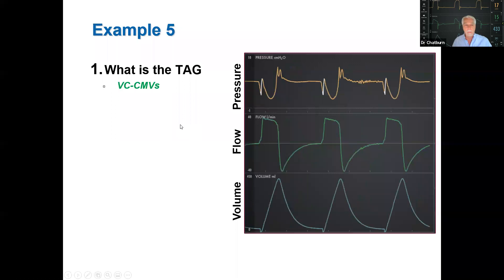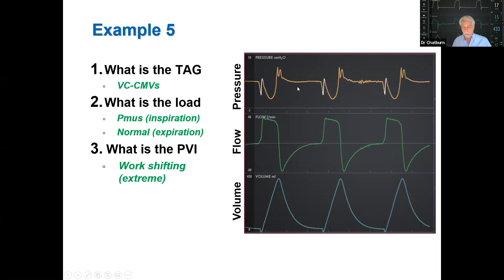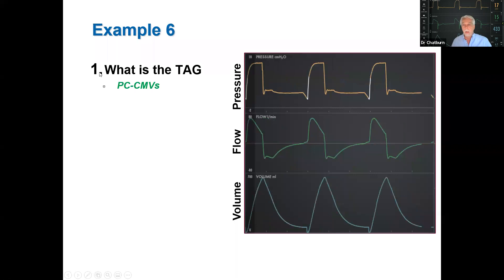Another example: volume control, continuous mandatory ventilation. The pressure waveform is dramatically distorted — during inspiration, the pressure waveform goes way below the expiratory pressure, looking like an inverse pressure waveform. This is what we call extreme work shifting. Because the inspiratory pressure goes below baseline pressure, we call this flow starvation — a bad sign clinically that you'd want to address.